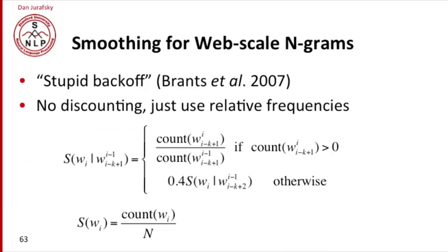What about smoothing for web scale n-grams? The most popular smoothing method for these very large n-grams is an algorithm called Stupid Backoff. Stupid Backoff is called stupid because it's very simple but it works well at the very large scale. And in fact, it's been shown to work as well as any more complicated algorithm when you have very large amounts of data.